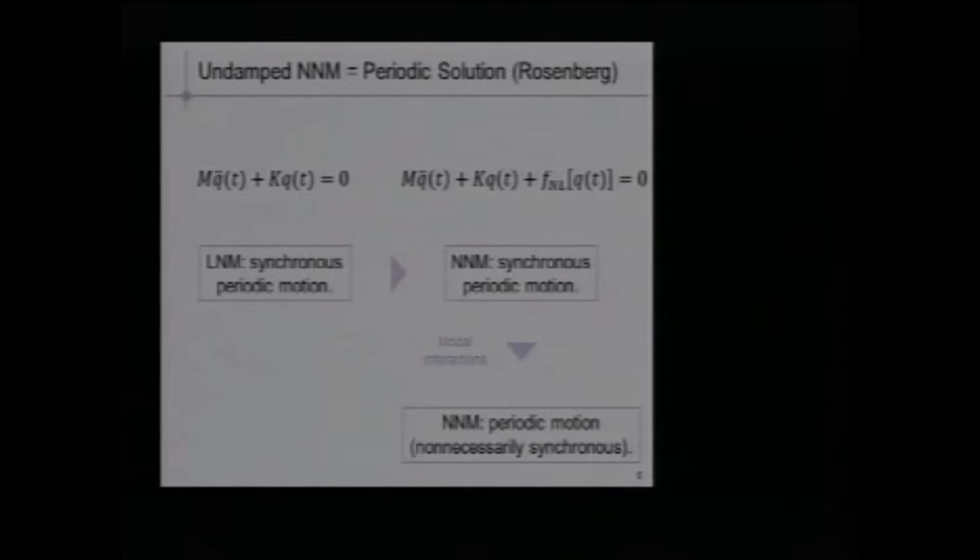Just a few words about nonlinear normal modes. We used Rosenberg definition, so basically a nonlinear normal mode is a periodic solution of the Hamiltonian system. But we have modified a little bit, because it's restrictive. We don't consider synchronous periodic motion, because you ignore modal interaction when you do that. We consider nonlinear normal mode just as periodic motion of your Hamiltonian system, and so they may not be synchronous when you have a modal interaction.